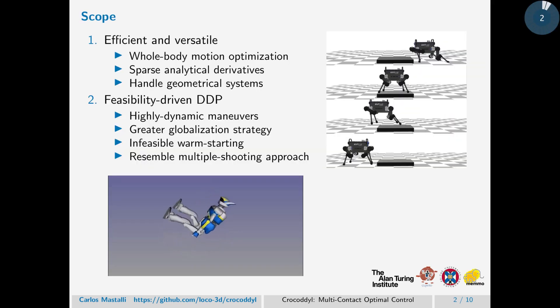The scope of the work can be described in two folds. First, an efficient and versatile library for multi-contact optimal control. Our method optimizes the whole body motion which enables a wide range of tasks such as the astronaut reorientation that we can see in the video.